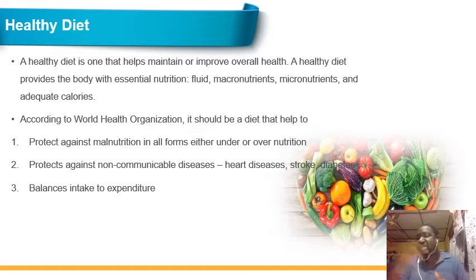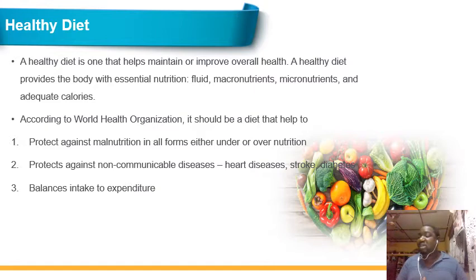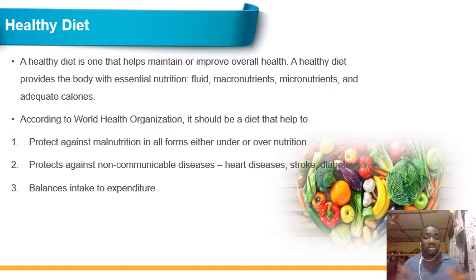Malnutrition can be over-malnutrition or under-malnutrition. If you don't take enough for you to have the required height for your age and sex, then you are under-malnourished. But if you have excessive intake — more than your expenditure — and retain lots of fat in the system, then you have over-nutrition, meaning you are either obese or overweight for your age and sex.